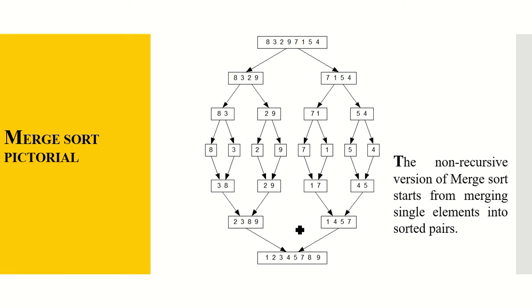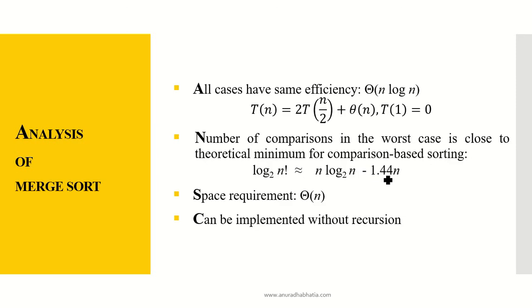This is a pictorial representation which we saw in the beginning. The non-recursive version of merge sort starts from merging single elements into the sorted pair. So here is how it works. But here we will be using recursion to split them into the single elements and then merge them together. If it is non-recursive, then it will be merging single elements into the sorted array.